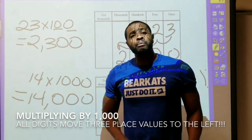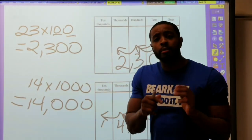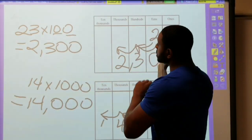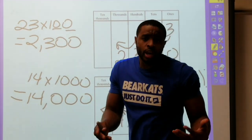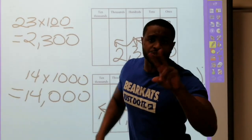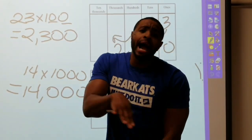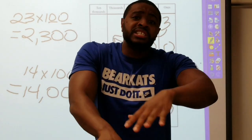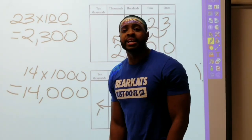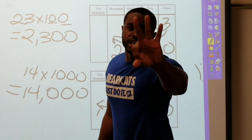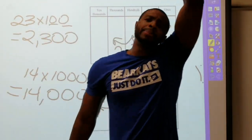Just to recap: anytime we're multiplying by ten, all digits move one place value to the left because it has one placeholder. When multiplying by one hundred, we move all digits two place values to the left because it has two placeholders. And when multiplying by one thousand, all digits move three place values to the left because it has three placeholders. It's Jamal Crawford — Hills Saturday Night Highlight, your boy!